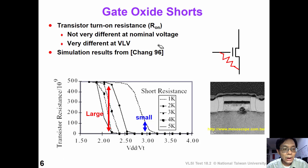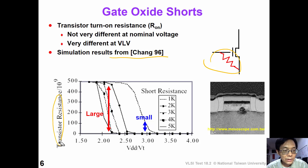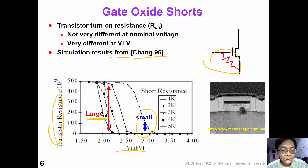This shows an experiment performed by Chang (1996). In this experiment, we inserted a defect resistance into the model. This slide shows the transistor resistance R-On at different voltages. At nominal voltage, the difference between the good chip and the faulted chip is small. However, at lower voltage, the difference between the good transistor and the defective transistor is much larger, so that we can tell them apart.